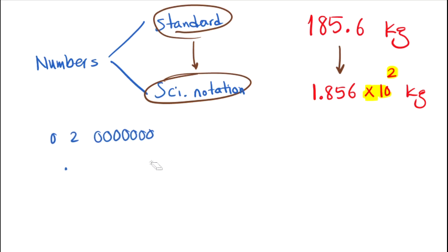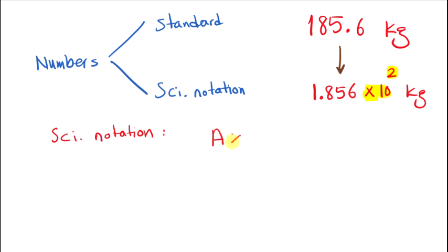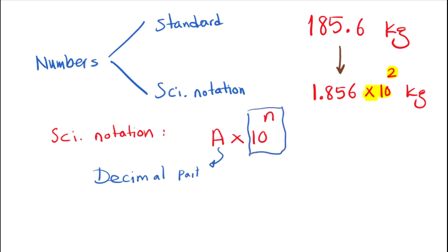Before talking about the methodology, I'm going to remind you: for scientific notation numbers, each scientific notation is composed of two parts. We write it as A times 10 to the positive or negative N. The first part, A, we call the decimal part, and the second part, N, is called the exponent part.